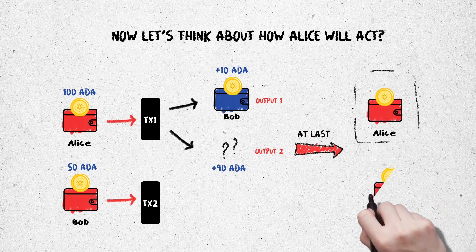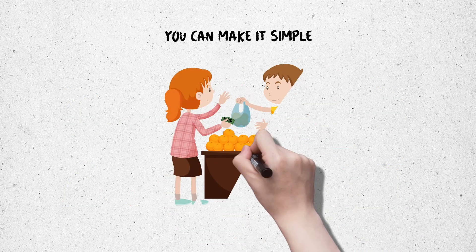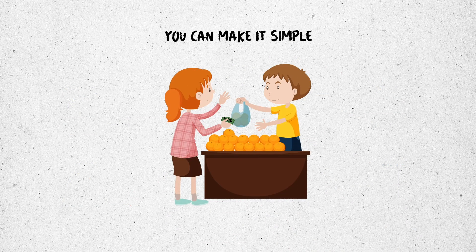At last, Bob's wallet will have 2 UTXOs — 50 ADA and 10 ADA — giving him a total of 60 ADA, and Alice will have 1 new UTXO of 90 ADA. You can make it simple: you go shopping for an item. Instead of paying 10 USD for it, you pay 100 USD.